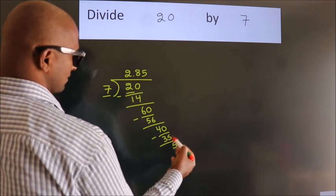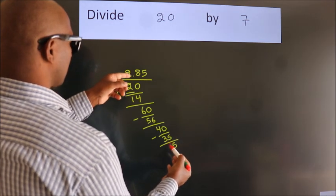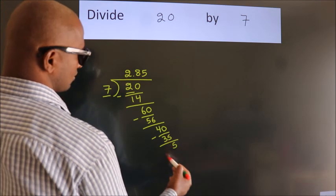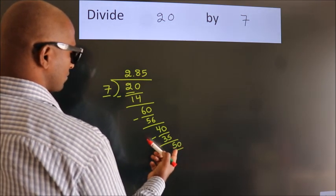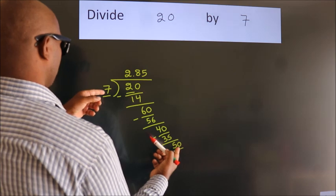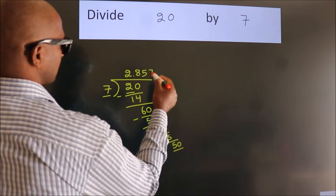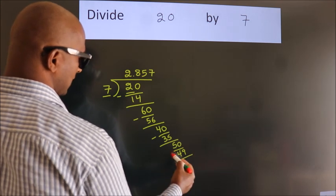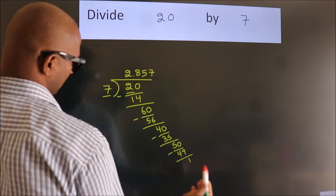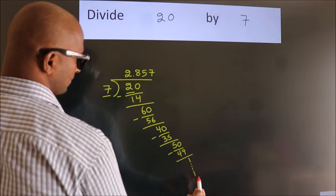After this, we already have the decimal. So directly take 0. So 50. A number close to 50 in 7 table is 7 7s 49. Now we subtract. We get 1. And the division continues.